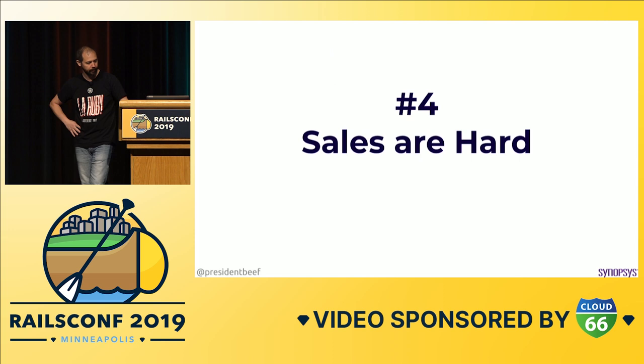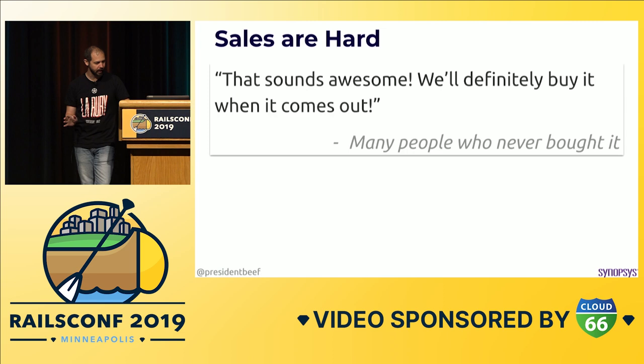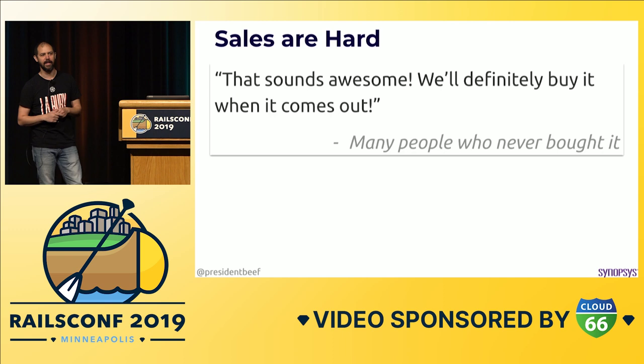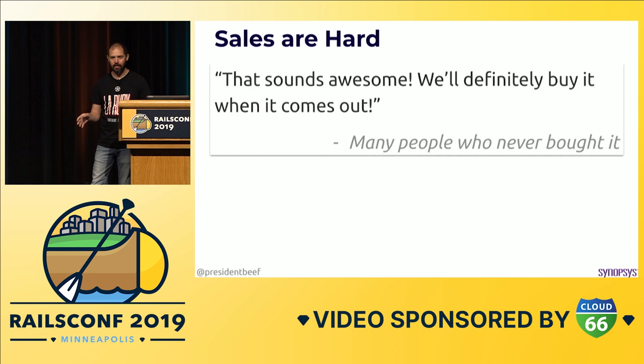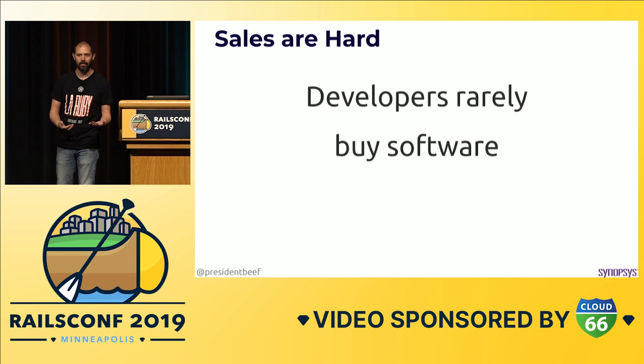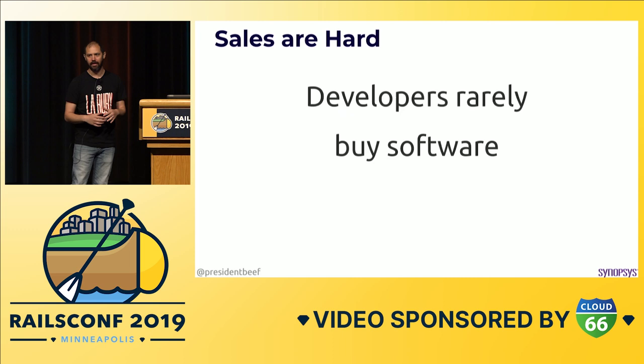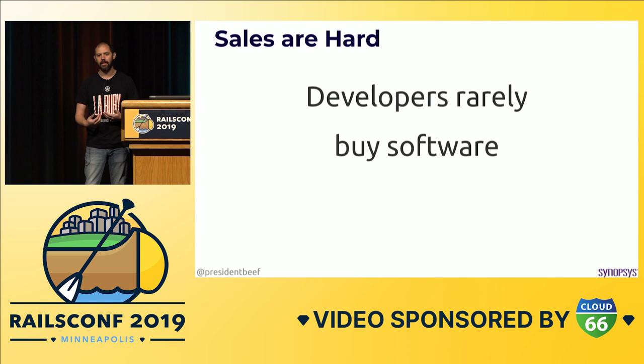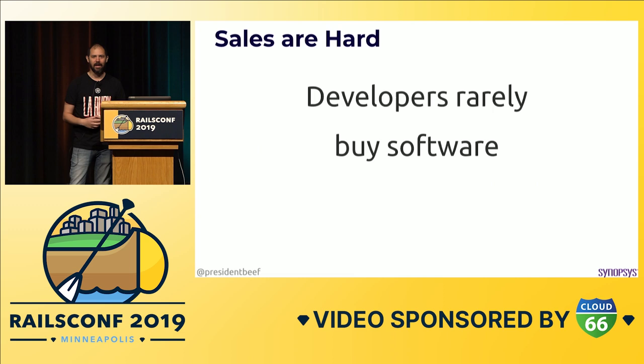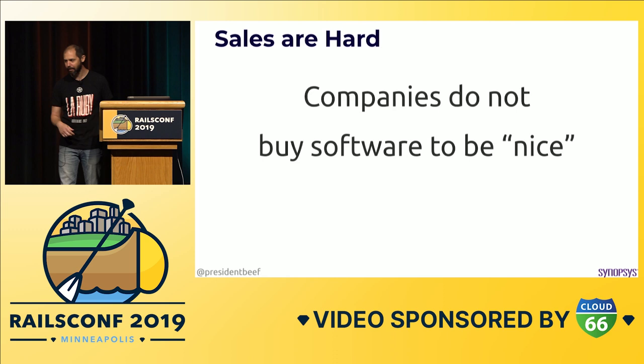Another problem — just a business problem: sales are hard. I heard this a few times: people would say, 'Hey, that sounds awesome, Brakeman Pro, I want to buy that — let me know when it comes out, I will buy that.' A lot of those people never bought it. And I'm not blaming them, because developers don't really buy software. If you want to buy software at a company, you're probably not authorized to do that. You have to ask your manager, they have to go to a budget, you have to go through a procurement process, you have to justify it as a business expense. Someone at RailsConf telling me they'll buy it kind of masks the reality of how things are purchased in a company.